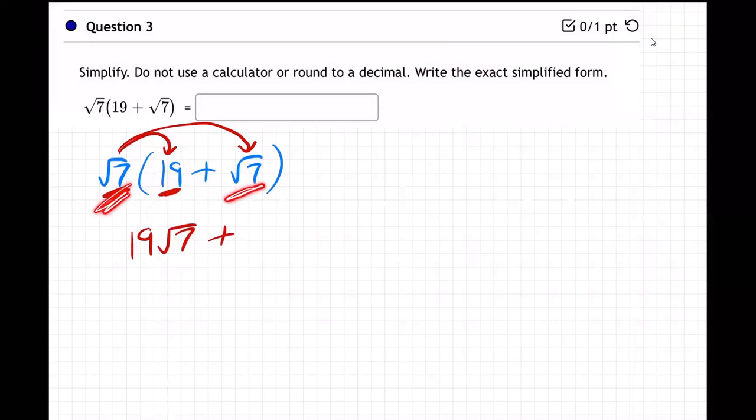Now, what about root seven, root seven? Well, now they are both insiders, aren't they? So they'll make 49. See what happened there? Root seven, root seven. They will multiply because seven times seven, because they're both insiders.